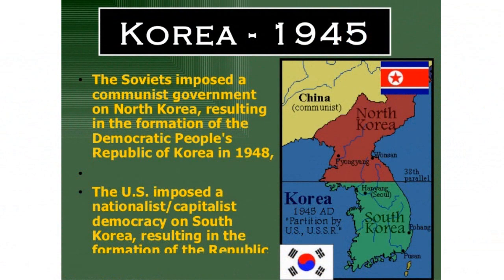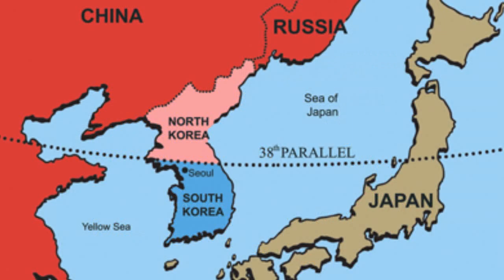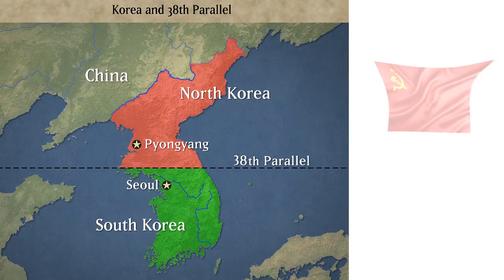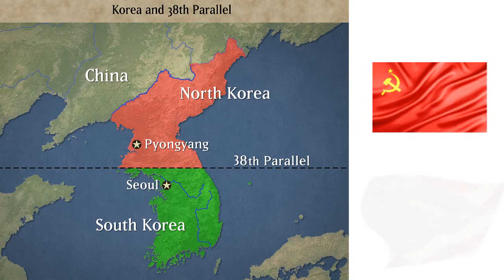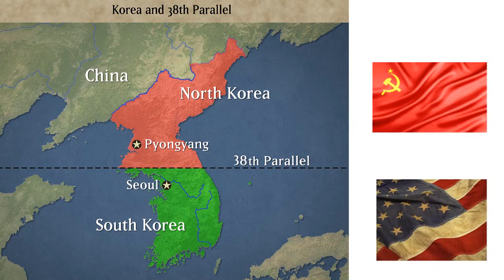At the conclusion of World War II in 1945, the nation of Korea, which had been controlled by Japan during the war, was divided into two pieces along the 38th parallel. North Korea was administered by the Soviet Union, while South Korea was governed by the United States.